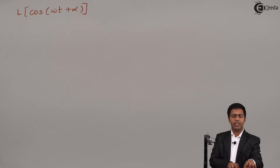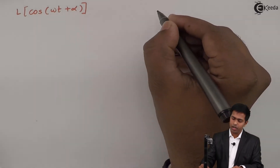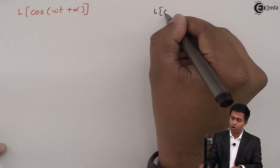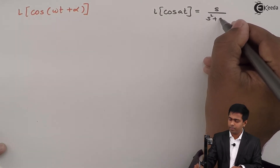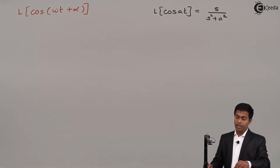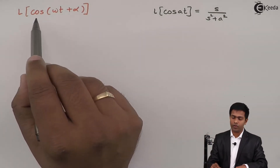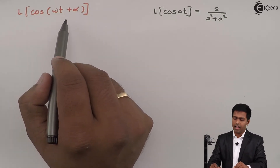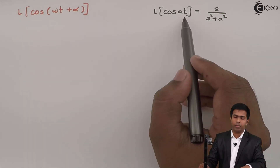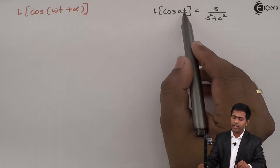Let us see the formula available to find out the Laplace transform of cos(At). The formula to find out Laplace of cos(At) is s upon s² plus A². Now, in the formula we have cos(At), whereas here we have cos(ωt + α). Since we have an extra term plus α, we cannot use this formula directly because this formula is applicable if and only if we have At with cos.